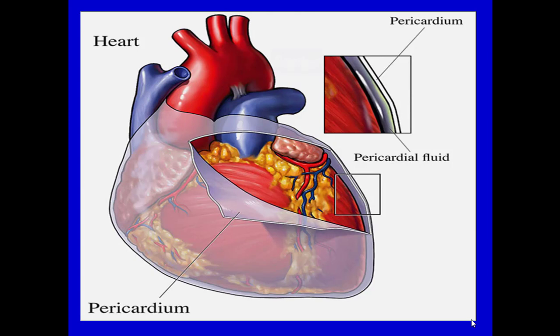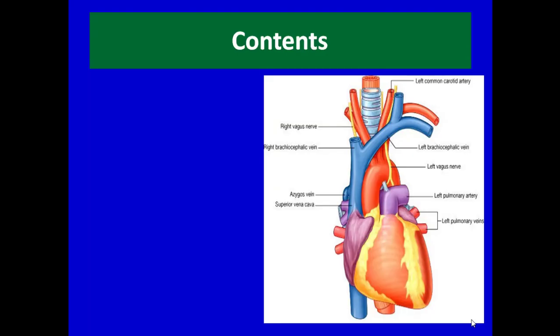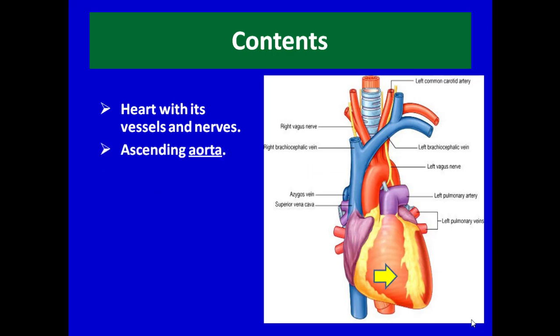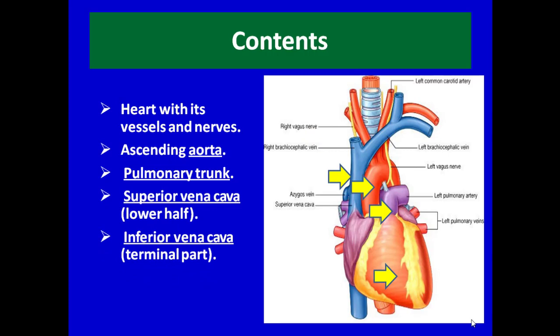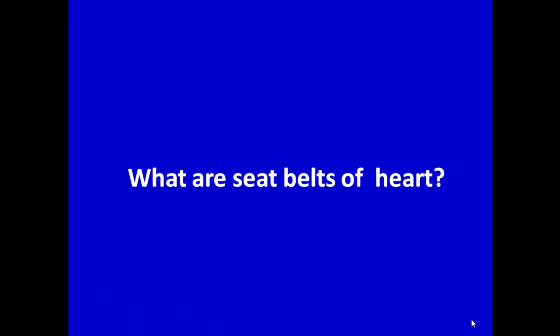What are the various structures inside the pericardium, or the contents of the pericardium? After removing the pericardium, we see the heart with its vessels and nerves, the ascending aorta, the pulmonary trunk, the superior vena cava (its lower half), the inferior vena cava (its terminal part), and the four pulmonary veins.